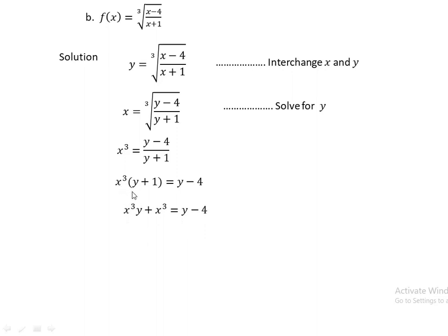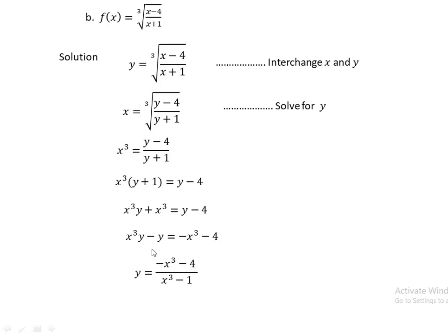Expanding gives x³y + x³ = y - 4. Collecting like terms: x³y - y = -x³ - 4. Factoring out the common y: y(x³ - 1) = -x³ - 4. Dividing both sides by (x³ - 1), we get y = (-x³ - 4)/(x³ - 1).